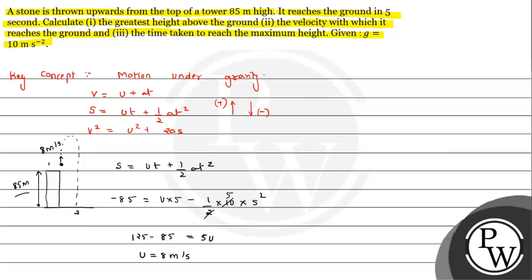We haven't been asked about initial velocity directly. For the first part, we need the greatest height above the ground. The greatest height above the ground means the total height from ground level. We have the tower height of 85 meters, and we let the additional height above the tower be small h. Let's call the topmost point number 3. Between points 1 and 3, we can apply the third equation of motion.